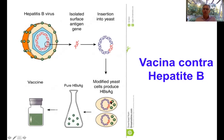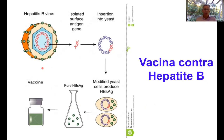Essas leveduras transformadas com o plasmídeo que contém o gene do antígeno de superfície do vírus da hepatite B passam a produzir essa proteína. Elas produzem a proteína e liberam no meio líquido. Esse antígeno vai estar no sobrenadante dessa cultura de leveduras, é purificado e, dessa maneira, a vacina contém os antígenos de superfície do vírus da hepatite B. Essa vacina é considerada também a primeira vacina que protege contra um tipo de tumor, porque o vírus da hepatite B é responsável por câncer de fígado, e as pessoas vacinadas estavam futuramente protegidas contra o câncer de fígado.